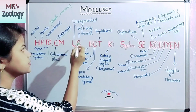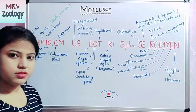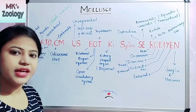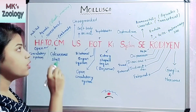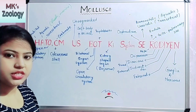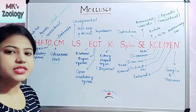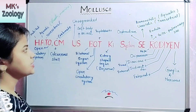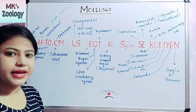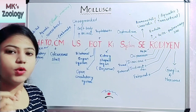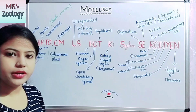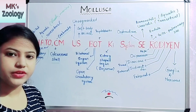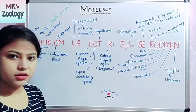U stands for unsegmented. Annelids are segmented and Arthropods are also segmented, but Molluscans have an unsegmented body — segments are not present in their body. Then S means soft-bodied animal. The body of the animal is soft, and the covering of the body — the shell — is present on the outside, which is hard.